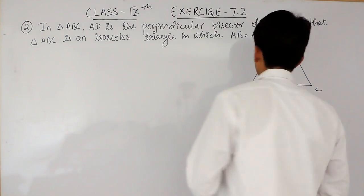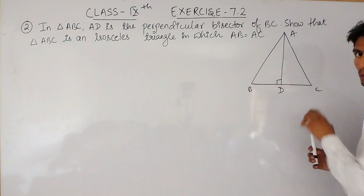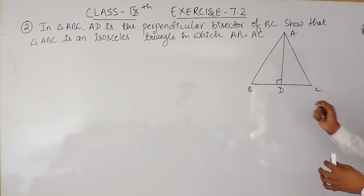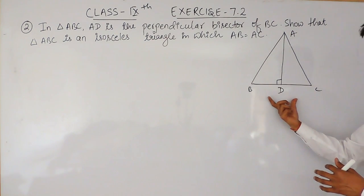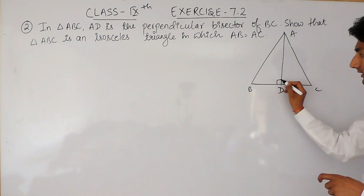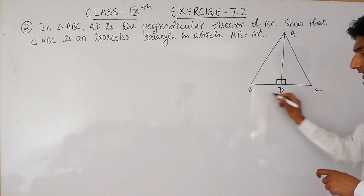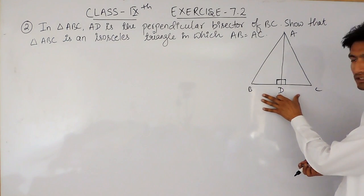So in this, it is given that ABC is a triangle where this AD is the perpendicular bisector of this BC. Now, what does perpendicular bisector mean? First of all, this AD must be perpendicular on this BC, and perpendicular means it should make an angle of 90 degrees with this base.